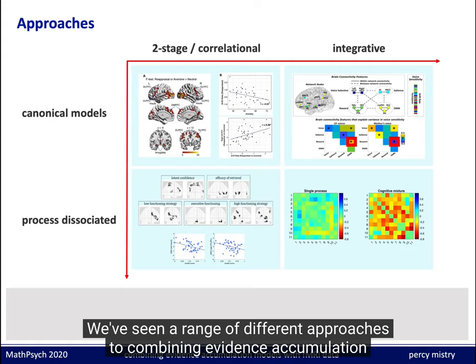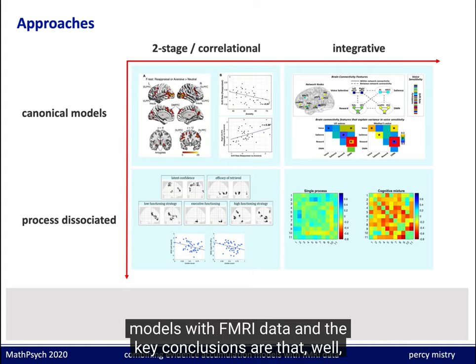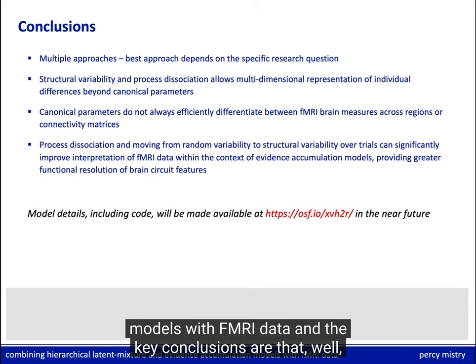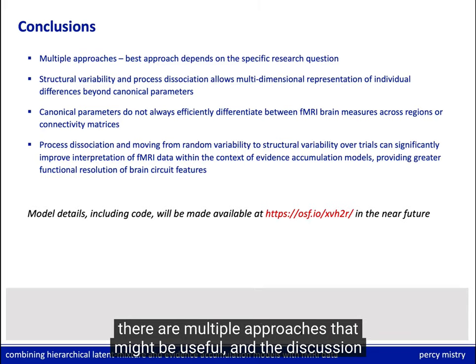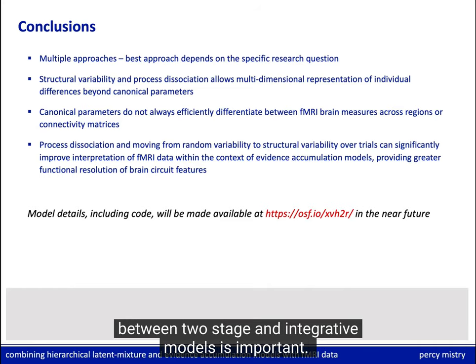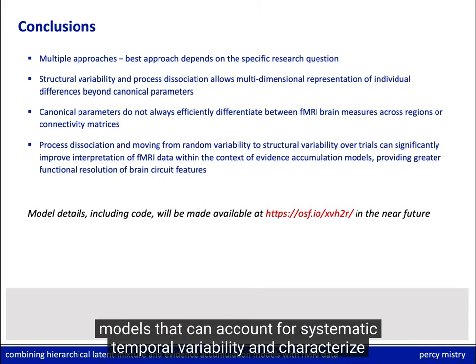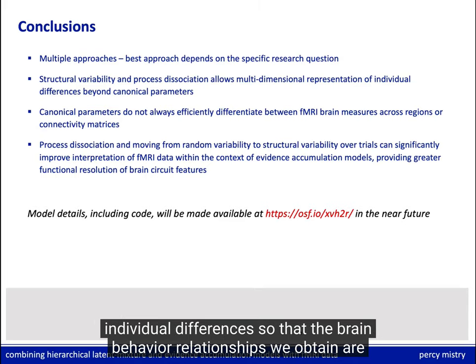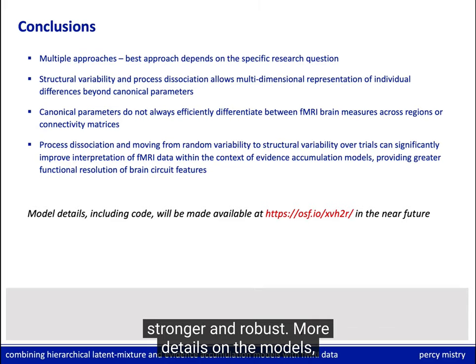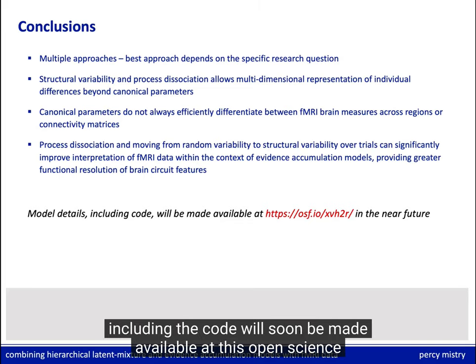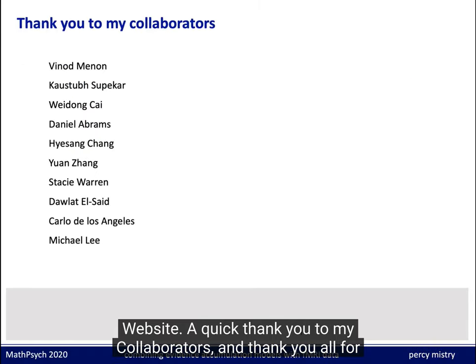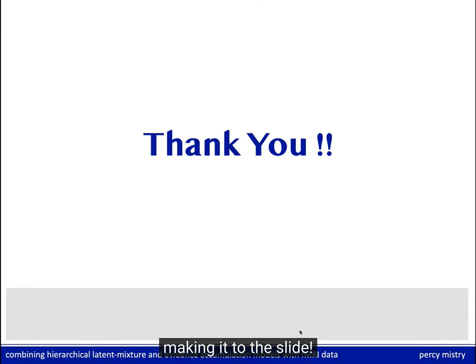We've seen a range of different approaches to combining evidence accumulation models with fMRI data. The key conclusions are that although multiple approaches may be useful and the discussion between two-stage and integrative models is important, we also need to think about augmenting canonical models with process-dissociated models that can account for systematic temporal variability and characterize individual differences, so that the brain-behavior relationships we obtain are stronger and more robust. More details on the models, including the code, will soon be made available at the Open Science website. Thank you to my collaborators, and thank you all for attending.